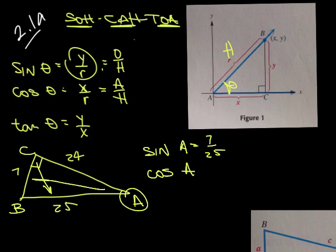Cosine of A will be adjacent over hypotenuse, and the adjacent one is 24, and it's going to be over 25.